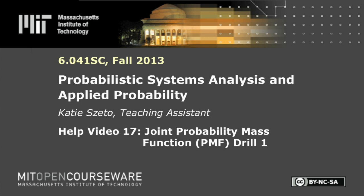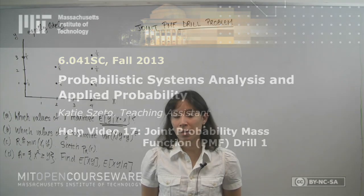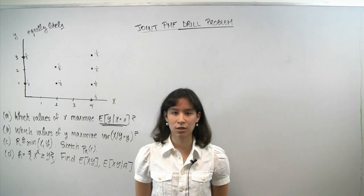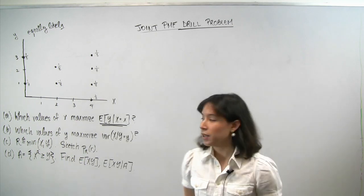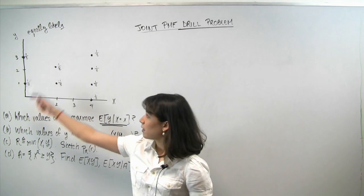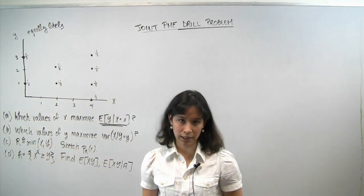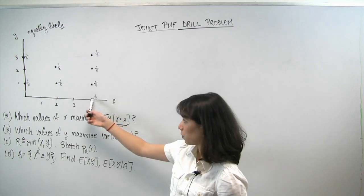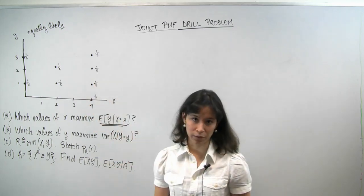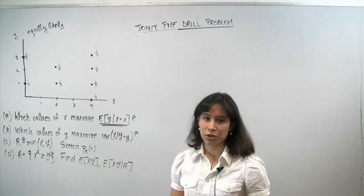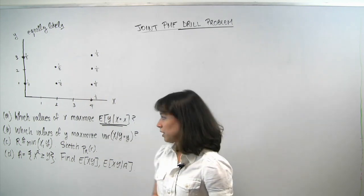Welcome back, guys. Today we're going to work on a problem that tests your knowledge of joint PMFs, and we're also going to get some practice computing conditional expectations and conditional variances. In this problem, we are given a set of points in the xy-plane, and we're told that these points are equally likely. There are eight of them, and each point has a probability of 1/8 of occurring. We're given a list of questions and we're going to work through them together.